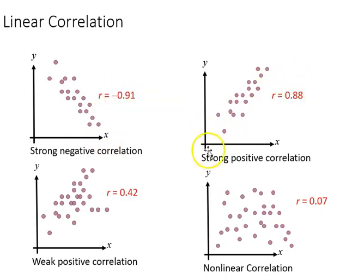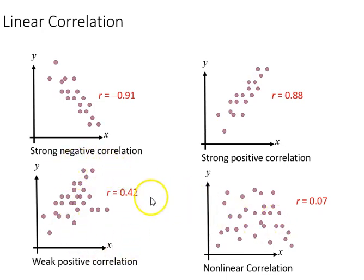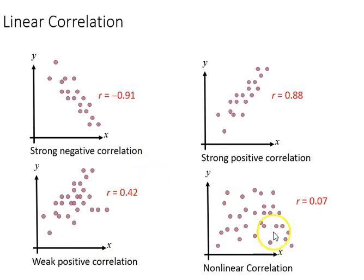Similarly, a 0.8 correlation, because it's getting close to 1, is a very strong positive correlation. In between we find some moderate values. 0.42 is a moderate relationship — some might call it weak because it's less than 0.5. The nonlinear correlation we see here with a 0.07 is really not related at all; it's very close to zero.